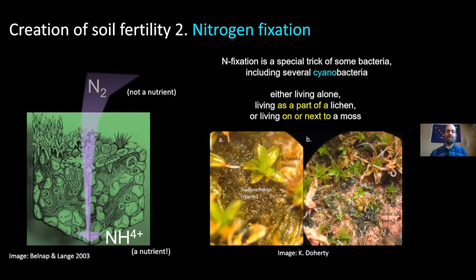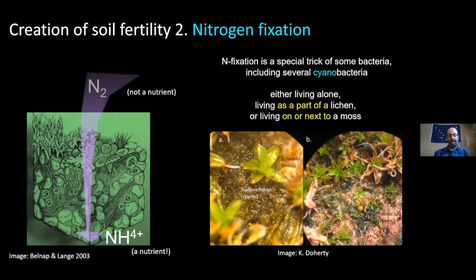This can only be done by bacteria. Rhizobium is a root symbiont of some plants, but there are also other bacteria that do this, including several cyanobacteria that inhabit the bio crusts. They may be living alone, living within a lichen as a photobiont, or commonly they're epiphytes on mosses or benefit from close proximity to mosses. These organisms are drawing in nitrogen and building up that most essential — or rather, most limiting — of plant nutrients.